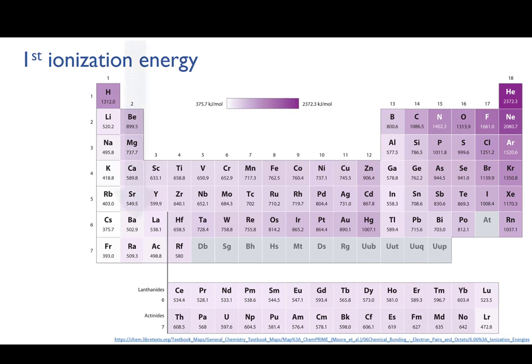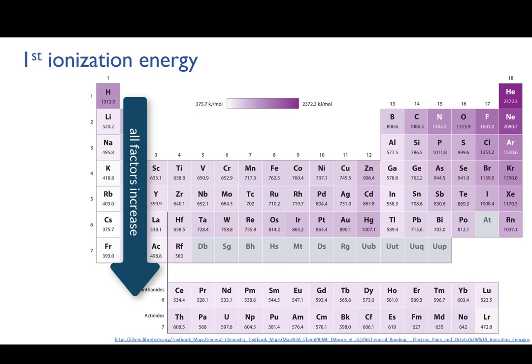Going down a group, the atomic number increases. But at the same time, the valence shell is getting further from the nucleus. Hydrogen's valence shell is electron level number one, lithium's is number two, sodium's is number three, and so on.